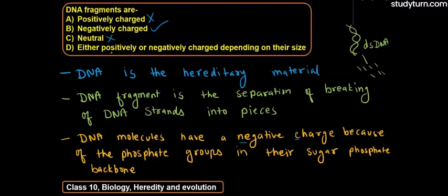This option says that the charge like positive and negative or negatively charged, but this is not correct because of the phosphate groups - because of the presence of the phosphate groups, DNA fragments are negatively charged. So we can say that our answer is option number B, which will be correct.